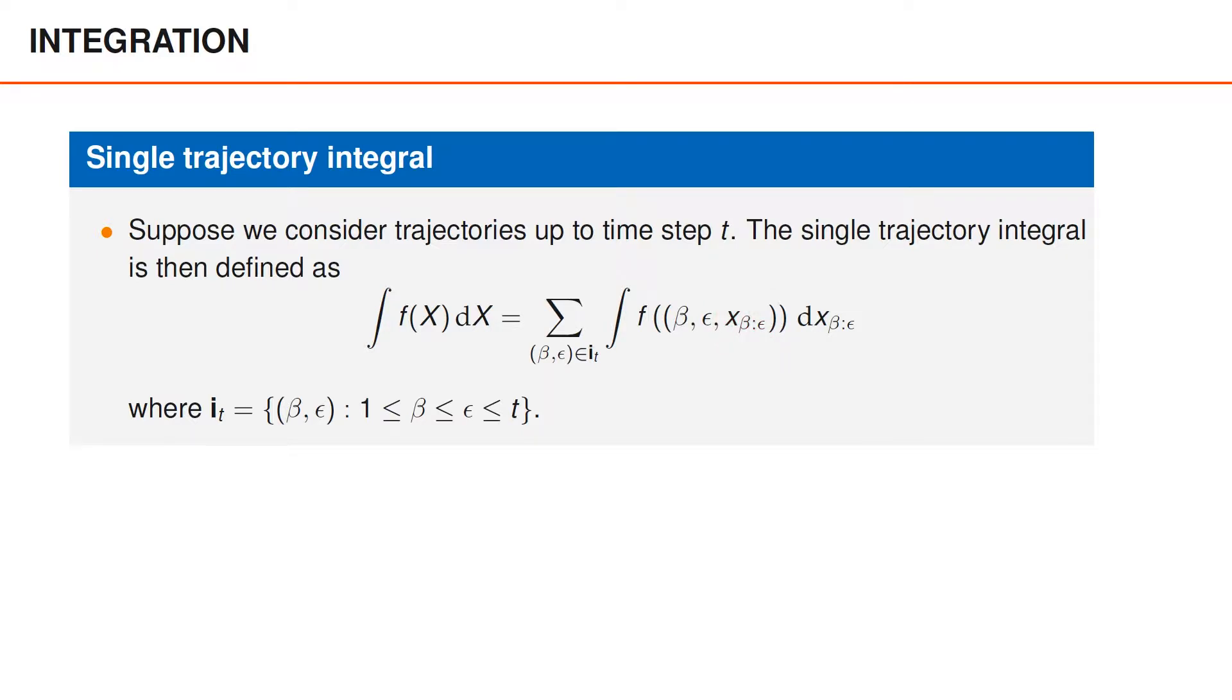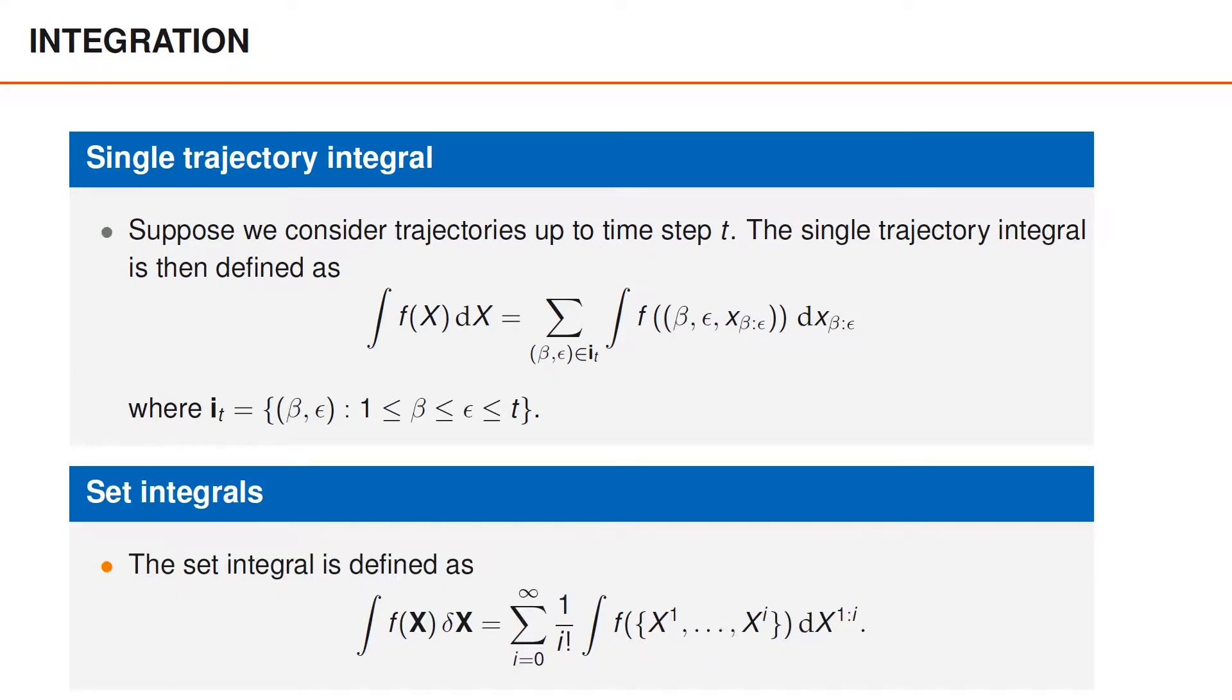More importantly, please note that the entire integral is simply summation over all trajectories. Given the above definition, the set integral is defined as before, but where the inner integrals are defined over trajectories and include summations over beta and epsilon.